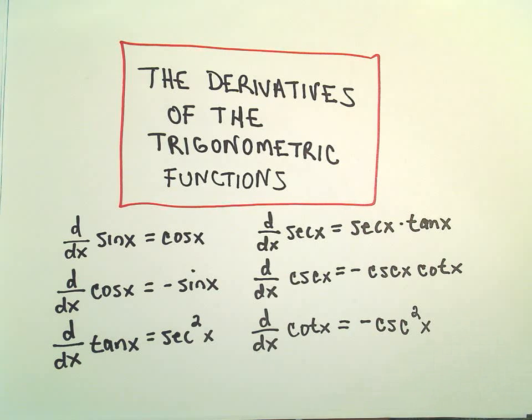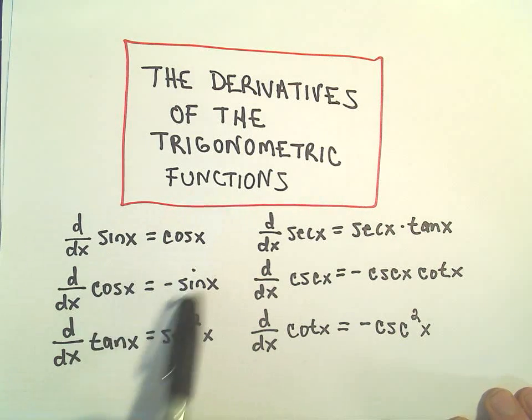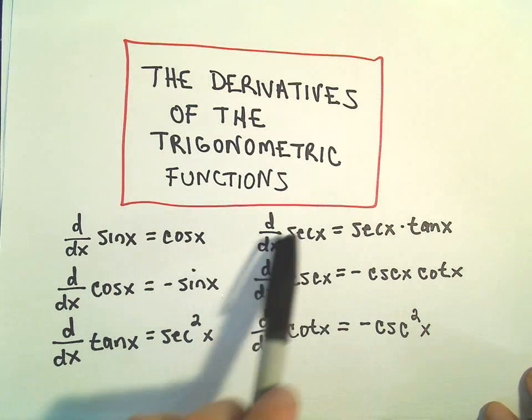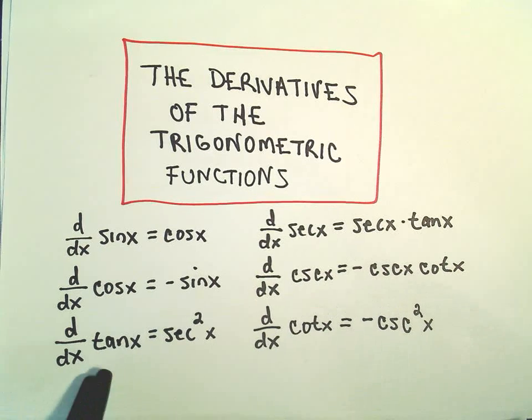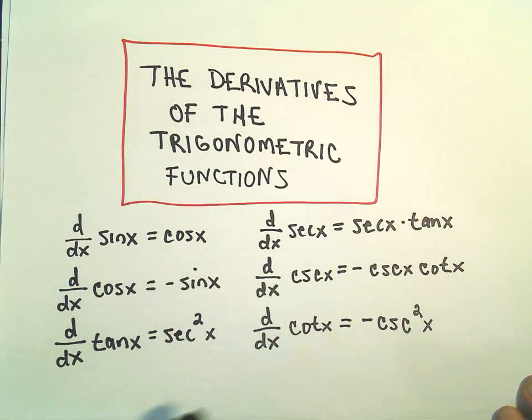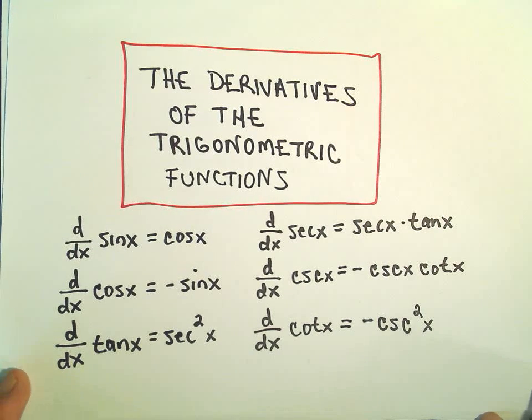Maybe a little pointer, just a little tidbit on how I remember them. The derivative of sine and cosine, I just kind of have those memorized. You can derive all of the others using just a quotient rule, chain rule, and trig identities. All the others you can derive pretty easily as long as you remember a couple identities.